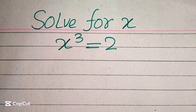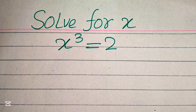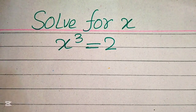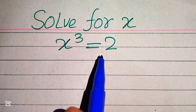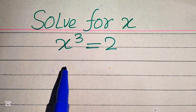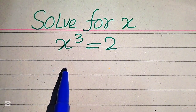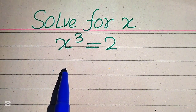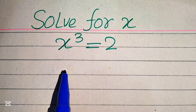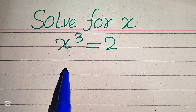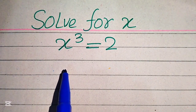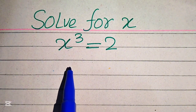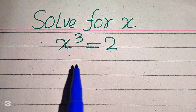Hello everyone, today I want to show you how to solve this problem: find all values of x if we have x cubed equals 2. I hope you like this method, but if you have any other method in mind, please don't hesitate to write it in the comment section. Now, the very first thing we are going to do is convert the right hand side into cubic form.